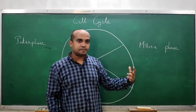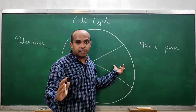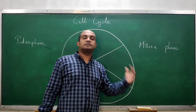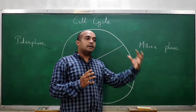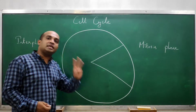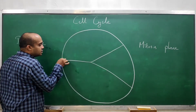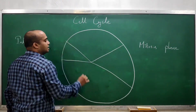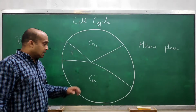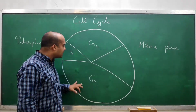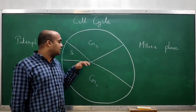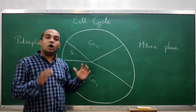This whole process from formation to completion of division is called the cell cycle, in which there are two phases. Interphase is again divided into three sub-phases: G1 phase, S phase, and G2 phase. The area given to each reflects the time duration taken by each phase — G1 takes the longest duration.